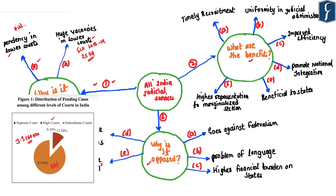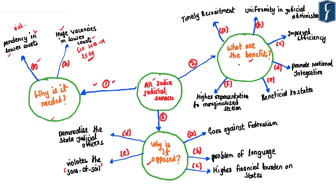By setting up the All India Judicial Service, we would be able to reduce the pendency in the lower courts and address the huge vacancies that presently exist. There are a number of benefits associated with setting up the AIJS. First and foremost, in most states, the State Public Service Commission conducts examinations for appointment of judges to the lower judiciary; however, it has been found that in most of these states, the examinations are not conducted on an annual basis, leading to huge vacancies. Once the AIJS is established, the UPSC would be able to conduct examinations on an annual basis, leading to the timely recruitment of judges at the lower judiciary.